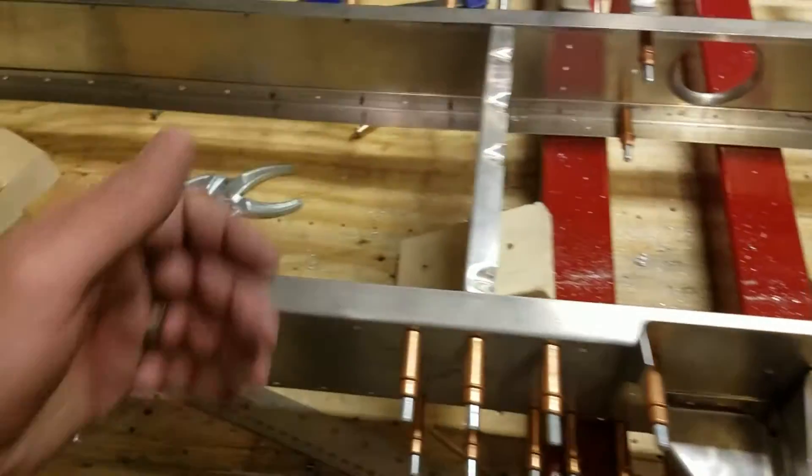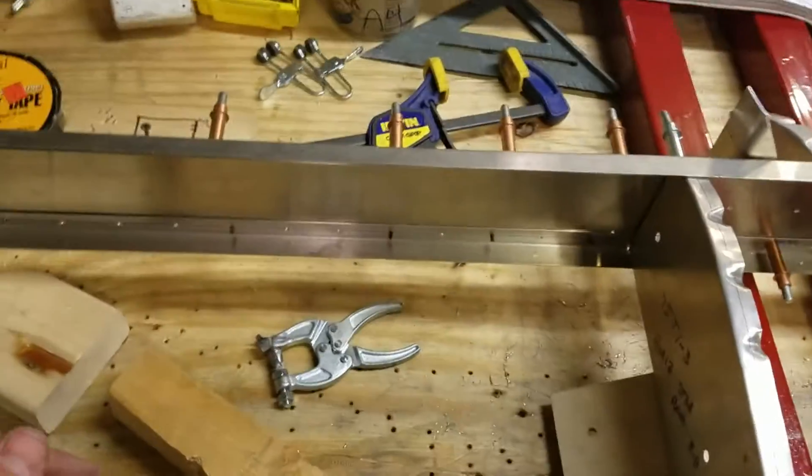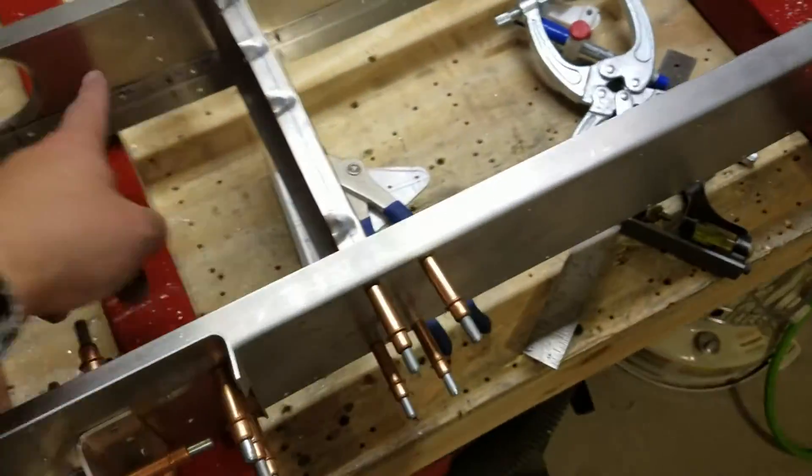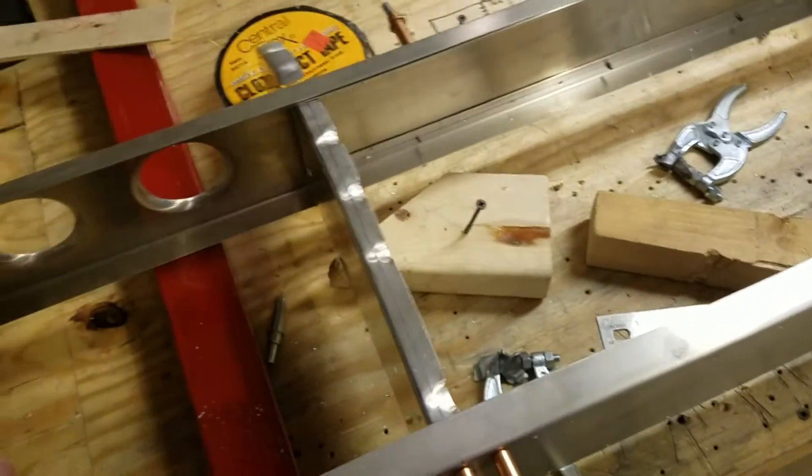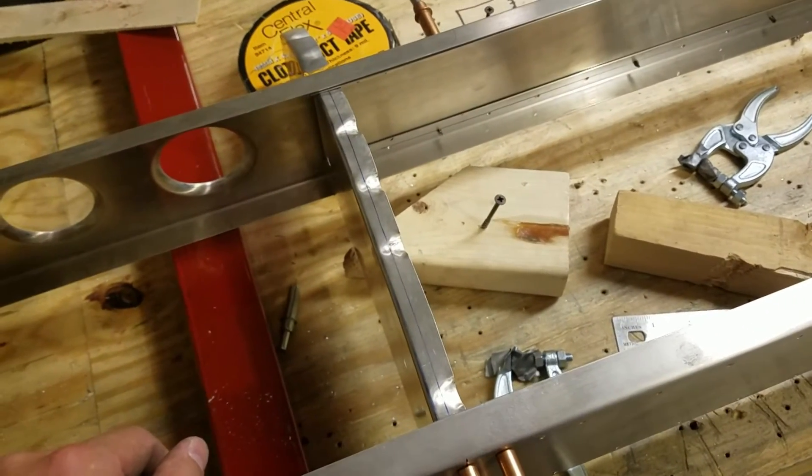What I'll probably end up doing is taking and turning all these Clecos around where they would interfere with the skinning process. So these and these nose Clecos here would all get flipped around and reattached from the inside, and then I can go ahead and skin it while it's just Clecoed together. Get everything drilled, lined up, take it all apart, make sure everything's deburred properly, then prime it, reassemble it, and final rivet the, at least the skeleton if not the skin.